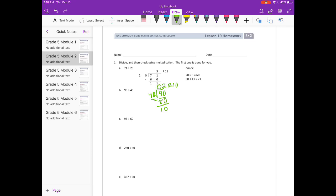2 times 40 is 80. We subtract and get 2 remainder 10. And then to check, we would do the 40 times 2 is equal to 80 plus the remainder is equal to 90. So we get 90 there. We started with 90, so that checks out.